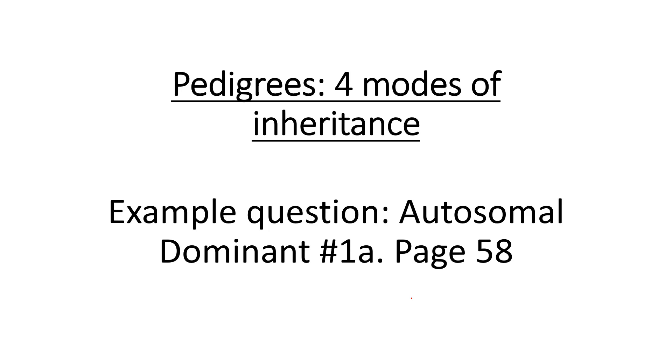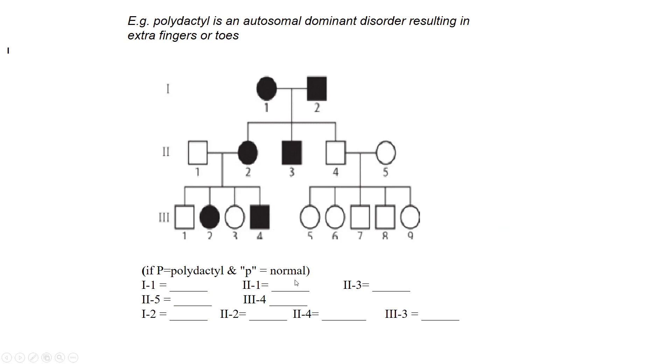We're working on autosomal dominance, page 58, question 1a. This is the third one we're working through. Autosomal dominant means carried on an autosomal chromosome, not a sex chromosome. We're going to have letters, but in this case it's dominant. These are fairly rare conditions, not as rare as sex-linked dominance.